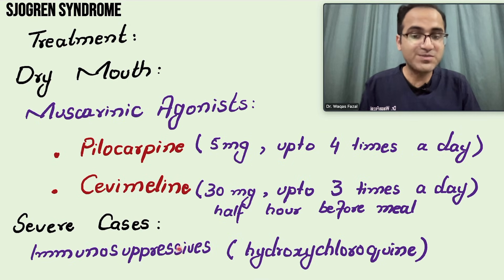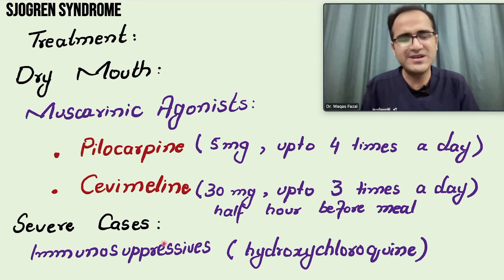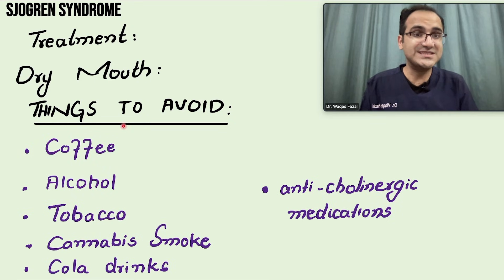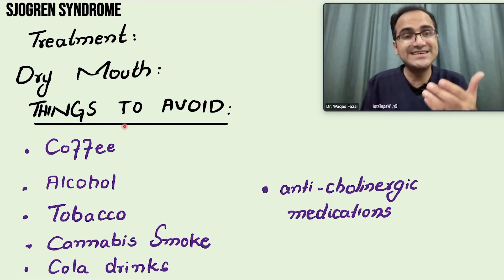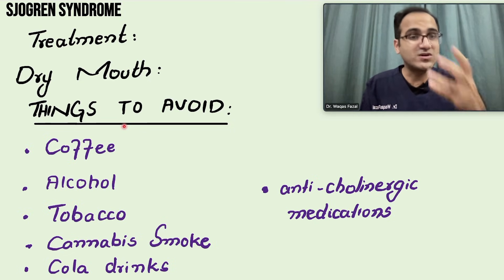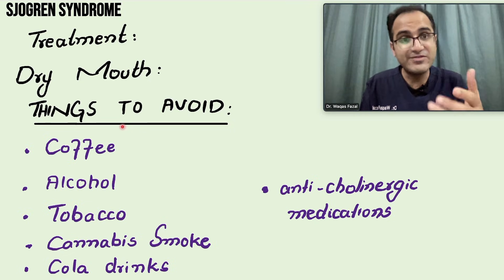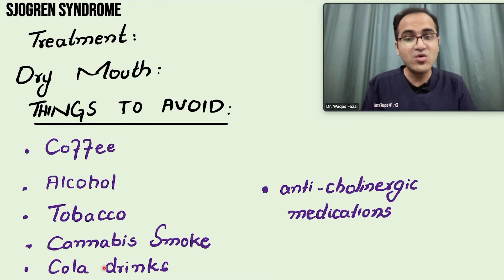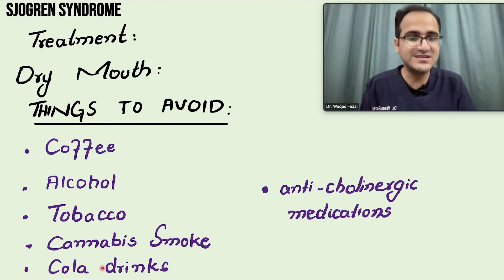In severe cases, immunosuppressants such as hydroxychloroquine can be given, though these are used rarely. Patients with dry mouth should also avoid acidic foods and things with toxic effects on the salivary glands such as coffee, alcohol, tobacco, cannabis smoke, and cola drinks. Anticholinergic medications that cause dry mouth should also be avoided.